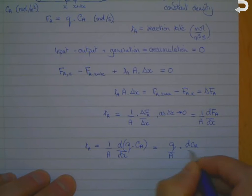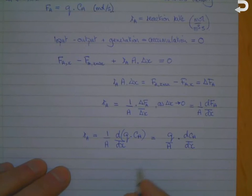And furthermore, we've got the volumetric flow rate there divided by the area, which is the same as the velocity of our fluid. So we can say that is u, where u is the velocity, times dCa by dx. And that's the basic equation which describes a plug flow reactor.